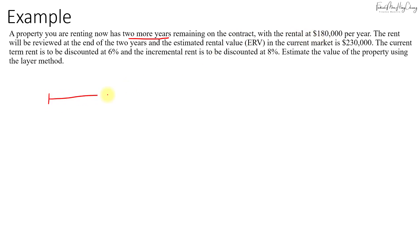For the next two years we have $180,000 for year one and $180,000 for year two. Then we estimate that after the rent review from year three onwards, the rent will go up to $230,000. That means there is an incremental $50,000 over the first rent.